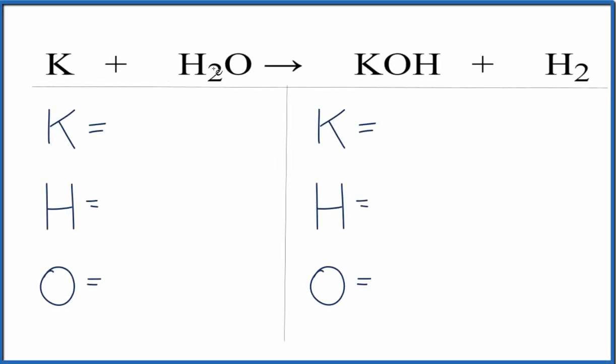In this equation, we have potassium plus water, giving us potassium hydroxide and hydrogen gas. To balance it, let's count the atoms up.